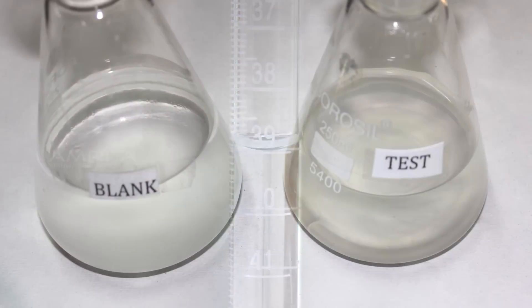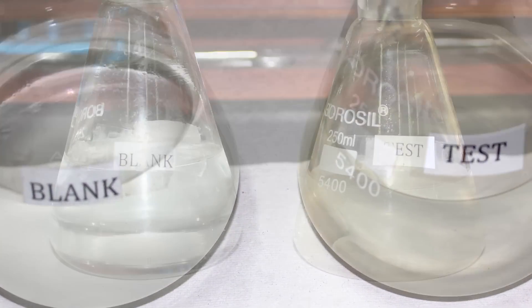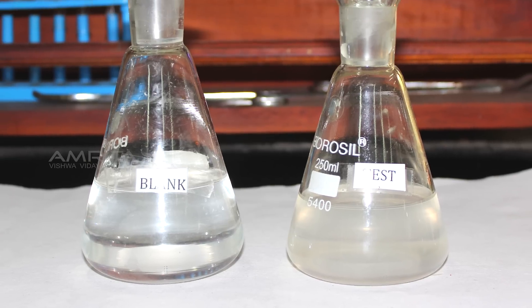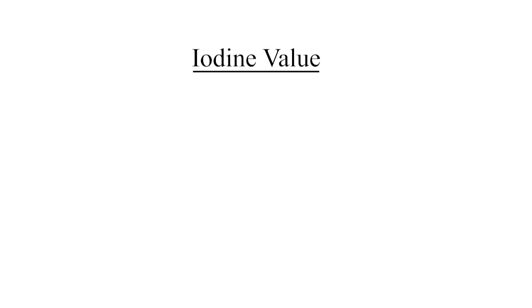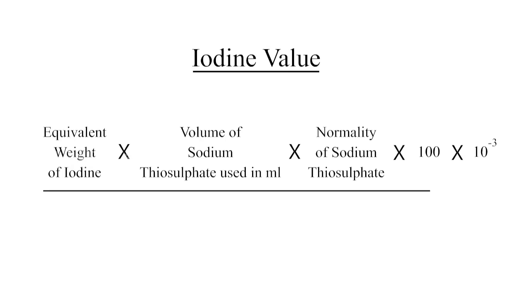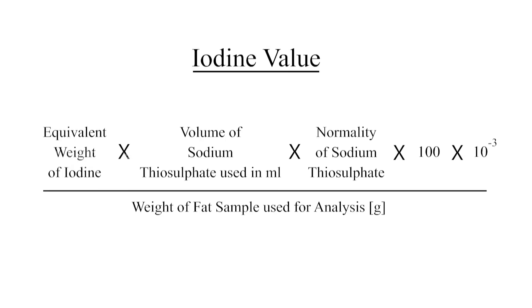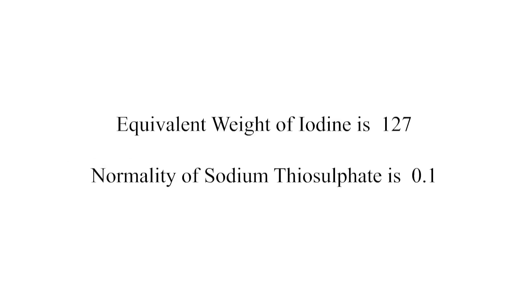The volume of the sodium thiosulphate used is obtained from the titre value, i.e. blank minus test. The iodine value can be calculated using the formula, where the equivalent weight of iodine is 127 and the normality of sodium thiosulphate is 0.1.